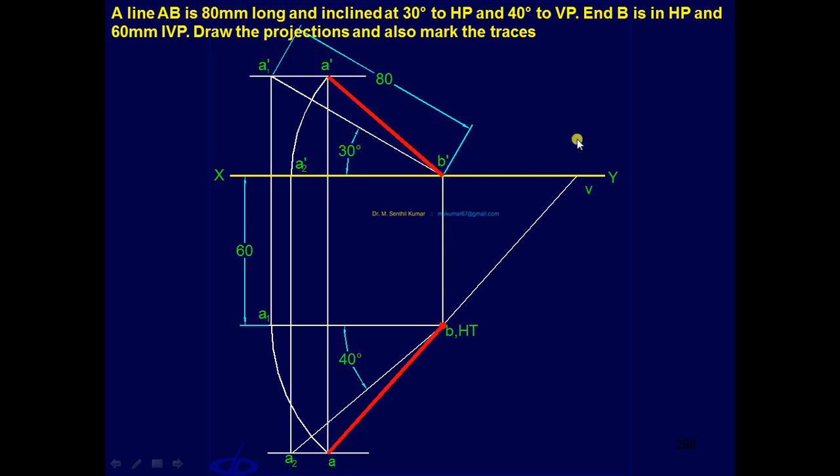Next step: draw a projector through V. Final step: extend A'B' till it cuts this projector - that is nothing but the vertical trace.